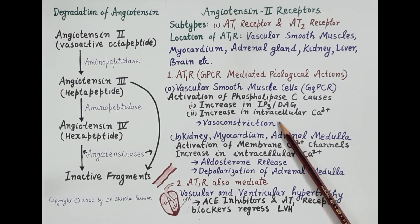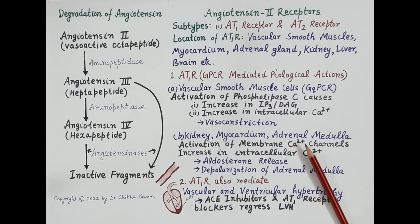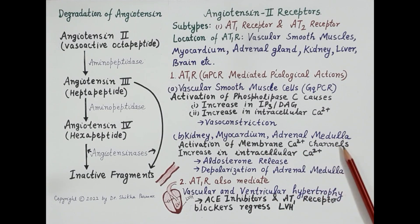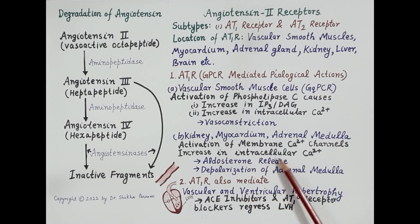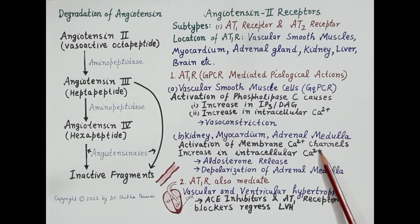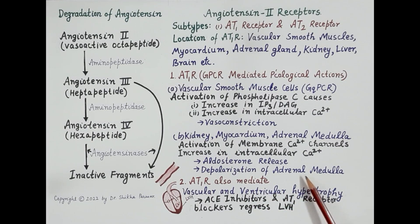Binding of angiotensin 2 to AT1 receptors on the kidneys, myocardium, and adrenal medulla causes activation of membrane calcium channels, increasing intracellular calcium. This increased intracellular calcium is responsible for the release of aldosterone from the adrenal cortex and causes depolarization of the adrenal medulla, triggering release of adrenaline.